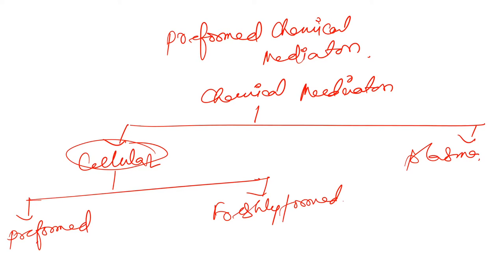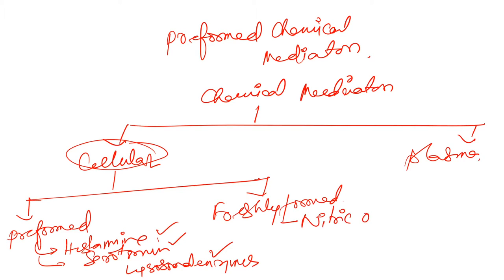What are the preformed? Preformed includes histamine, then you get serotonin, and we have lysosomal enzymes. These are the three preformed. Freshly formed includes a gaseous agent that is nitric oxide, then we have got peptides such as cytokines, and we also have got arachidonic acid and metabolites. These are freshly formed, produced during the time of inflammation and not naturally present in our body.